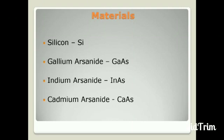What materials are used in solar cells? Commonly silicon, gallium arsenide, indium arsenide, and cadmium arsenide are used in solar cell preparation.